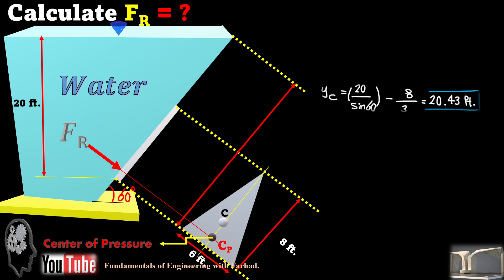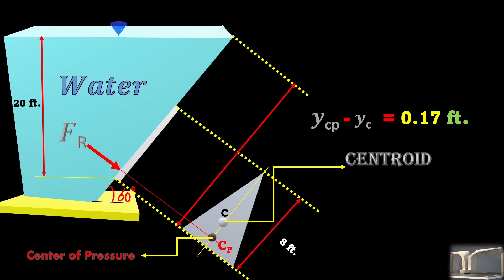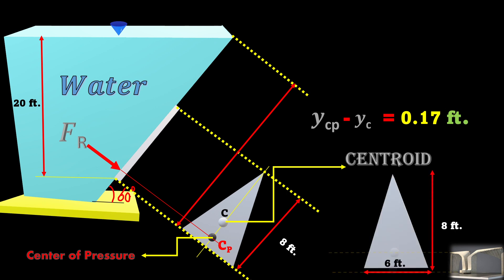And if you keep a closer look at yc and ycp, you can easily see there is a small difference: ycp minus yc equals 0.17 feet. And if you want to show it graphically on the page, 0.17 feet is the distance between centroid and center of pressure.